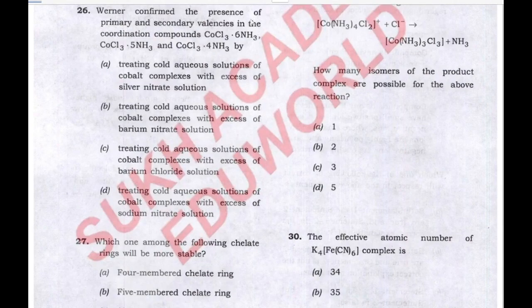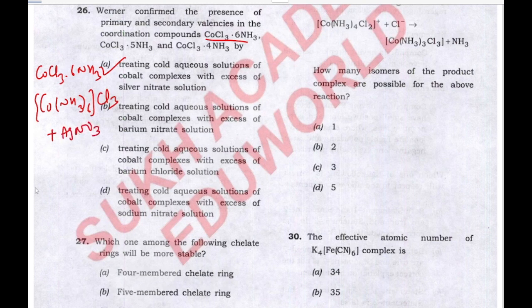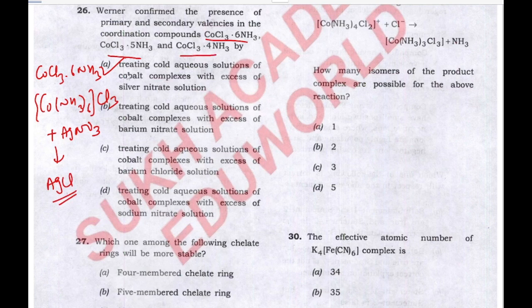In the next question, Werner confirmed the presence of primary and secondary valencies in coordination compounds. The correct answer is A. In Werner theory, when a cold aqueous solution of cobalt complexes is treated with excess silver nitrate solution, there is formation of silver chloride precipitate in each case. So A is the correct answer.